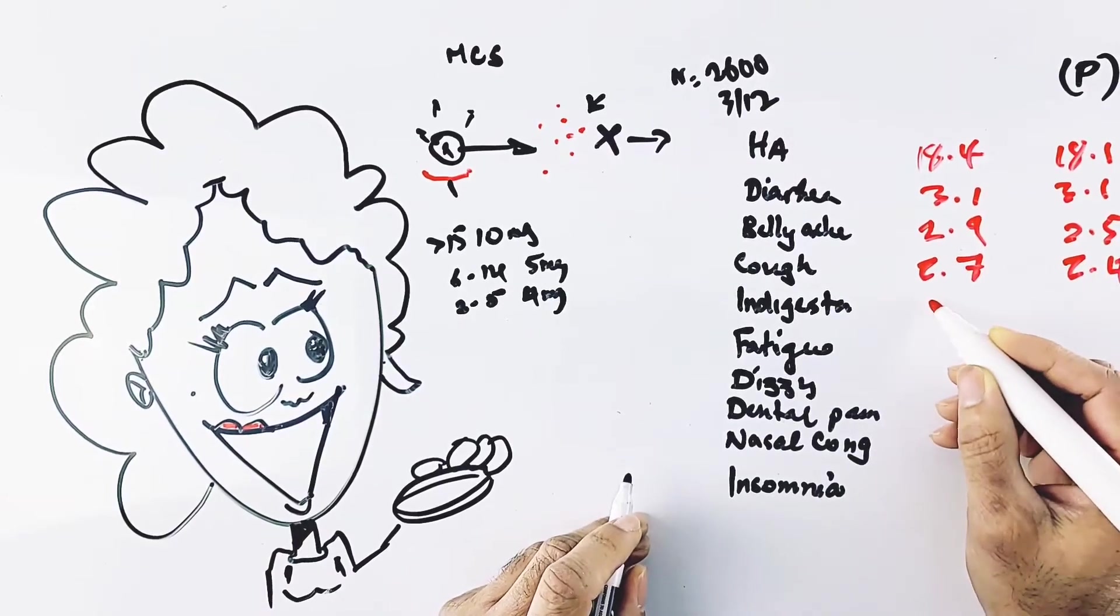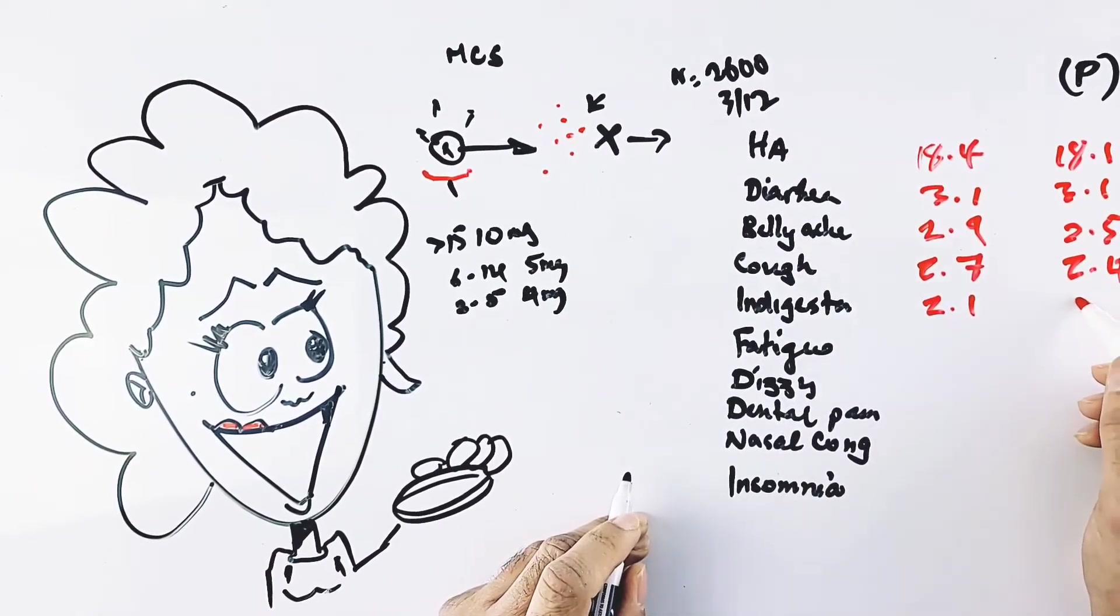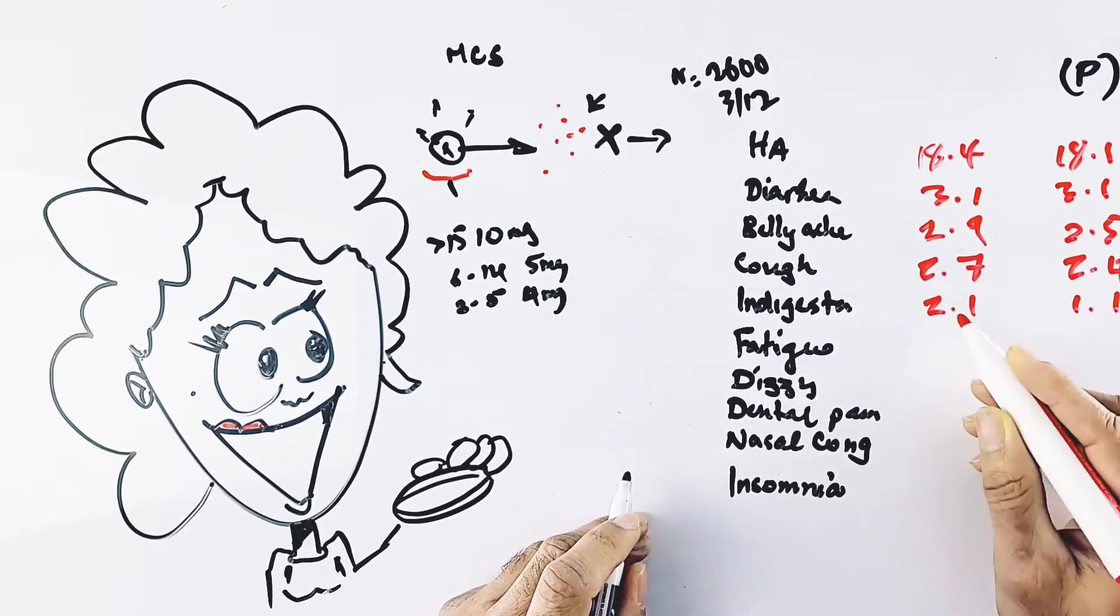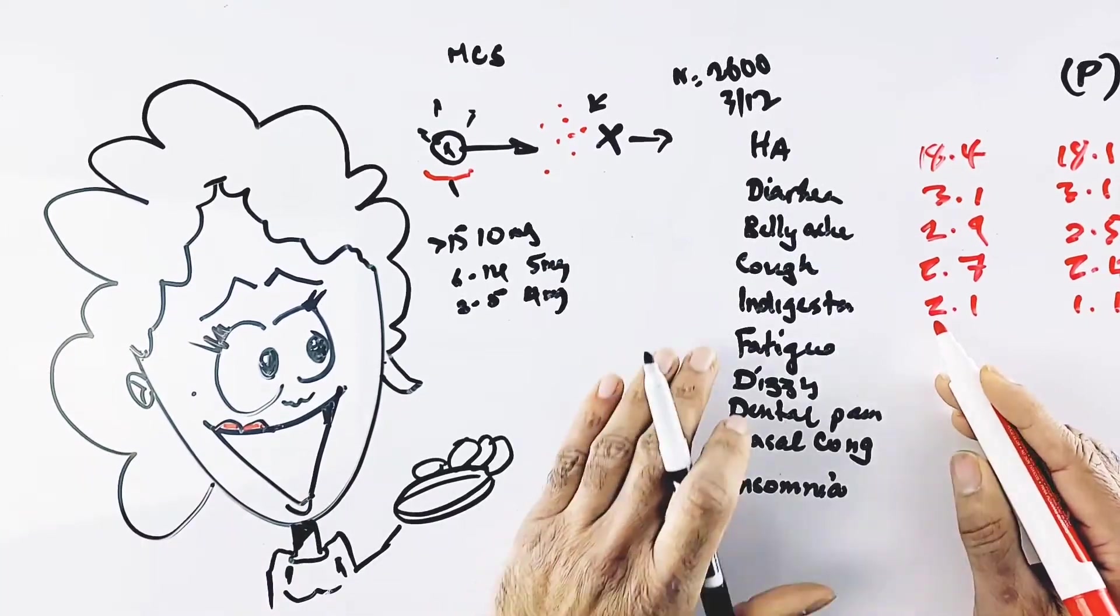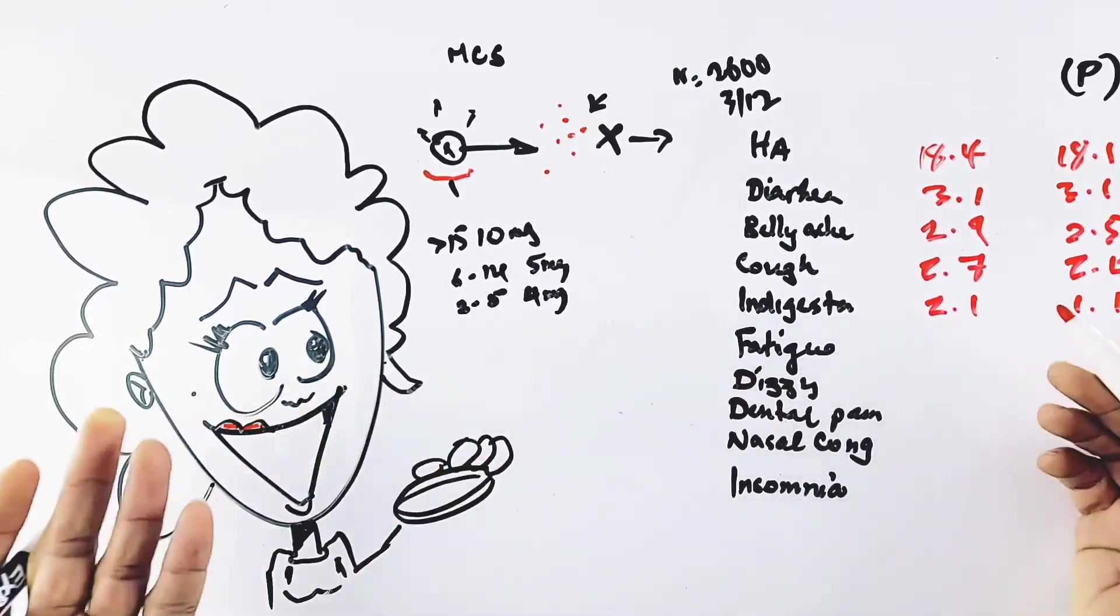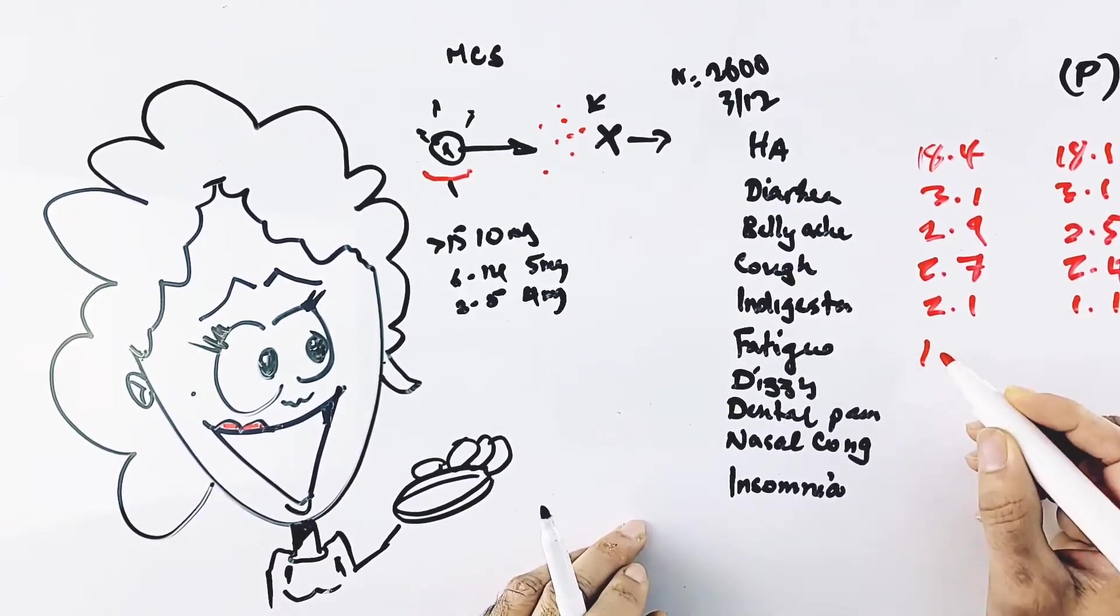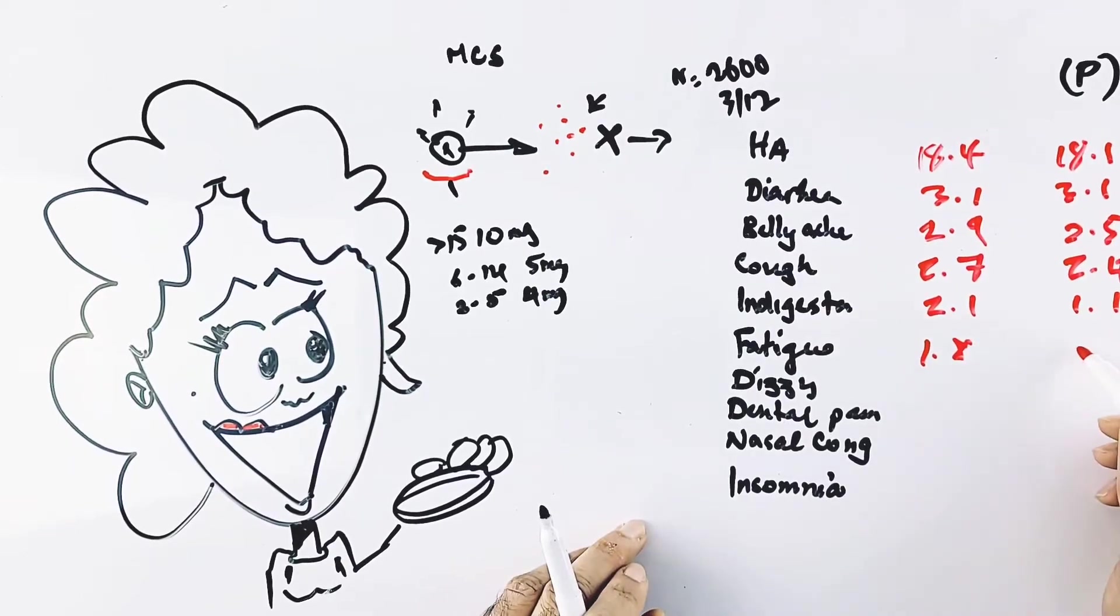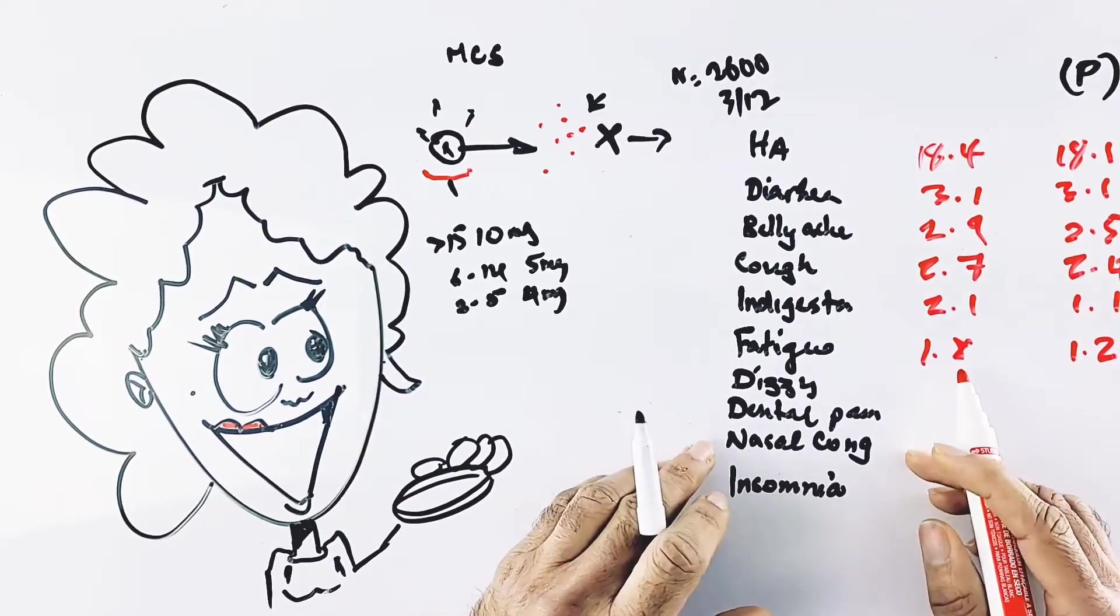Indigestion or dyspepsia came in at 2.1% versus 1.1% on sugar pill. Even if you say it's a 1% chance of indigestion from Montelukast, that's a very small price to pay. Fatigue was 1.8% versus 1.2% on placebo—very well tolerated.